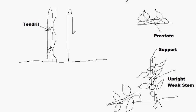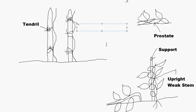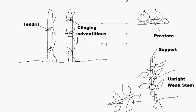Another type of climber produces adventitious roots to cling to the support. These are known as clinging roots, or clinging adventitious roots. So root climbers use adventitious roots — a modification of the adventitious root — to help the climber grow up the support.